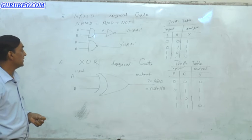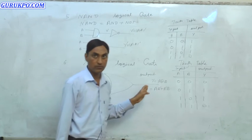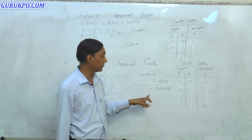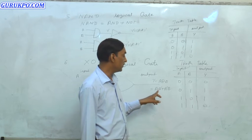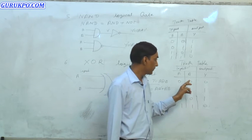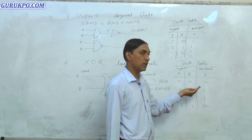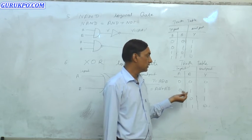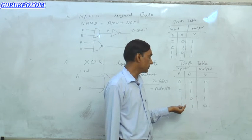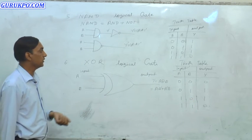The sixth logic gate is the XOR logic gate. There are two inputs A and B, and output is Y. The formula is Y = A·B' + A'·B. Truth table: inputs 0 and 0 give output 0; inputs 0 and 1 give output 1; inputs 1 and 0 give output 1; inputs 1 and 1 (high and high) give output 0. This is the truth table of the XOR logical gate.